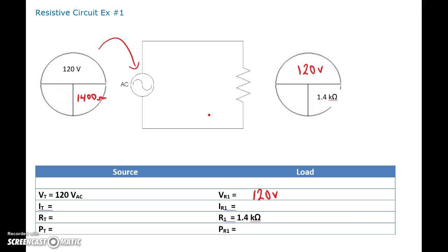If you take the 120 and you divide it by 1.4, you're going to get 85.7 milliamps. Right here if we go 120 divided by 1.4, this is going to give you 85.7.